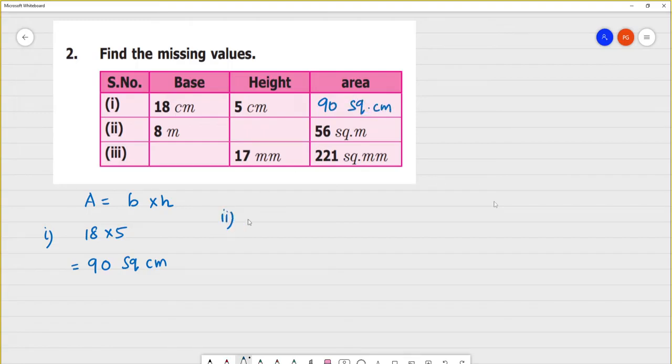Next, second one. Second one, what do you do? Base into height is equal to area. Area we know. Base is 8. We know area is 56. So height is equal to 56 square centimeter. Height is equal to 56 by 8 square centimeter.